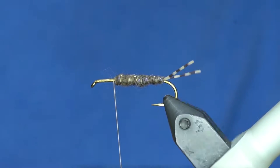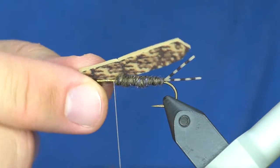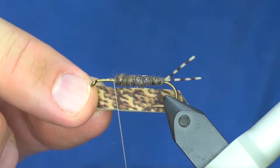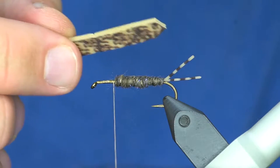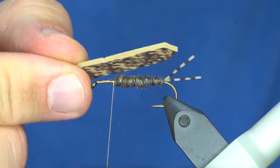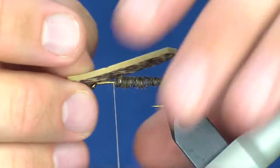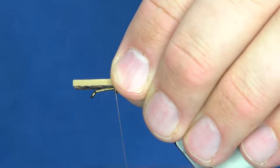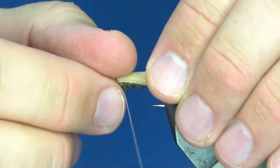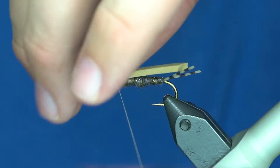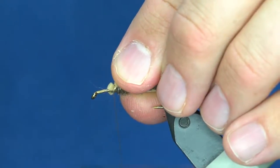For this one, I'm going to leave about that much of the hook bare. Once I have the body tied down, I'm going to take this photo foam. You can see I just cut a strip about roughly the width of the hook gap, and I've cut it to a point. You can use the river road cutters on this if you want.